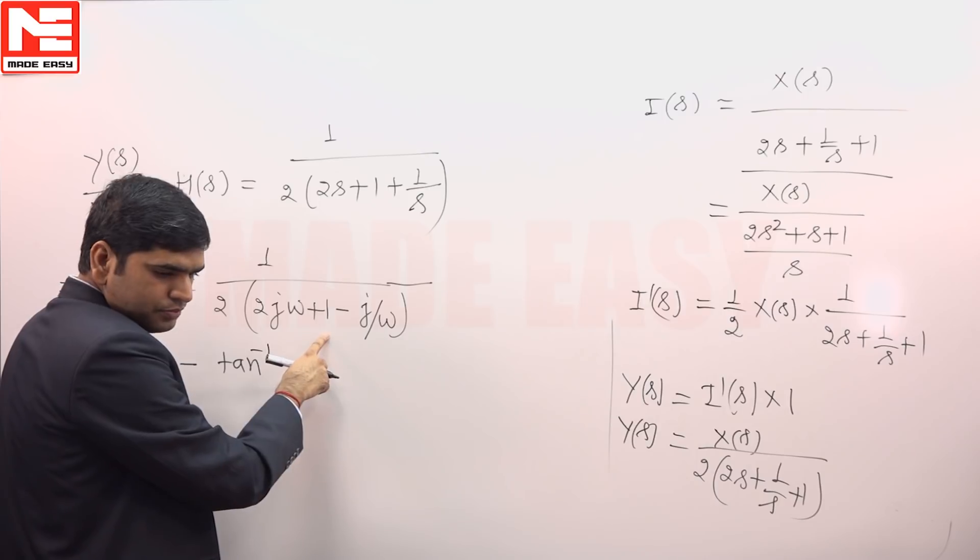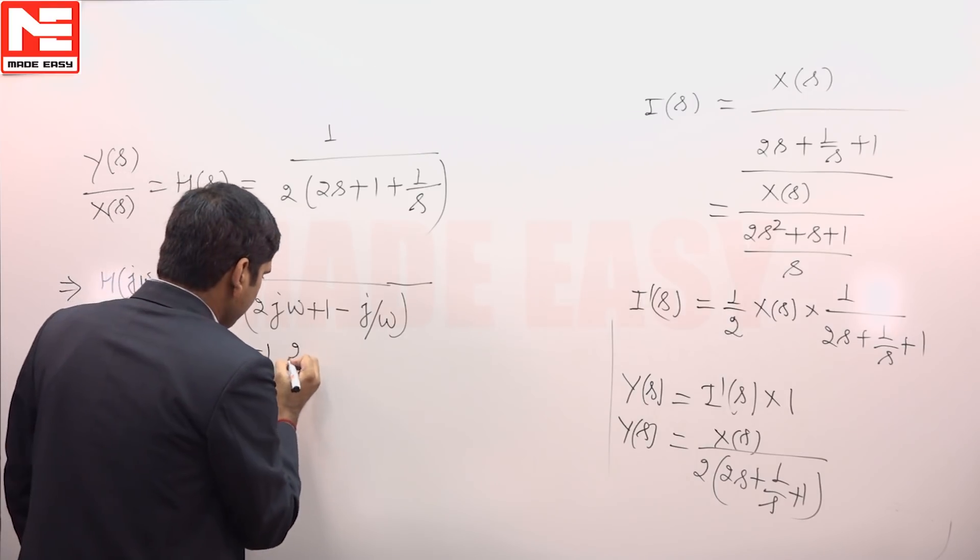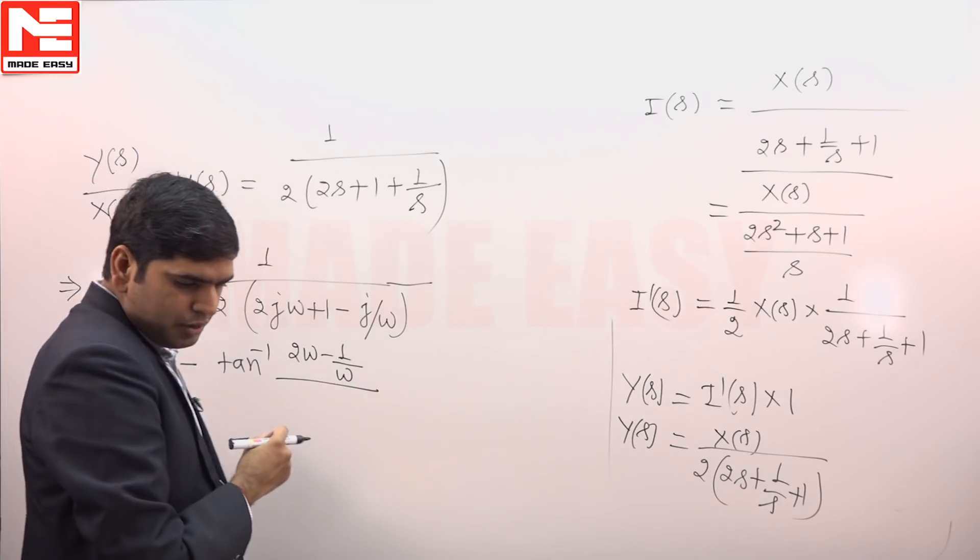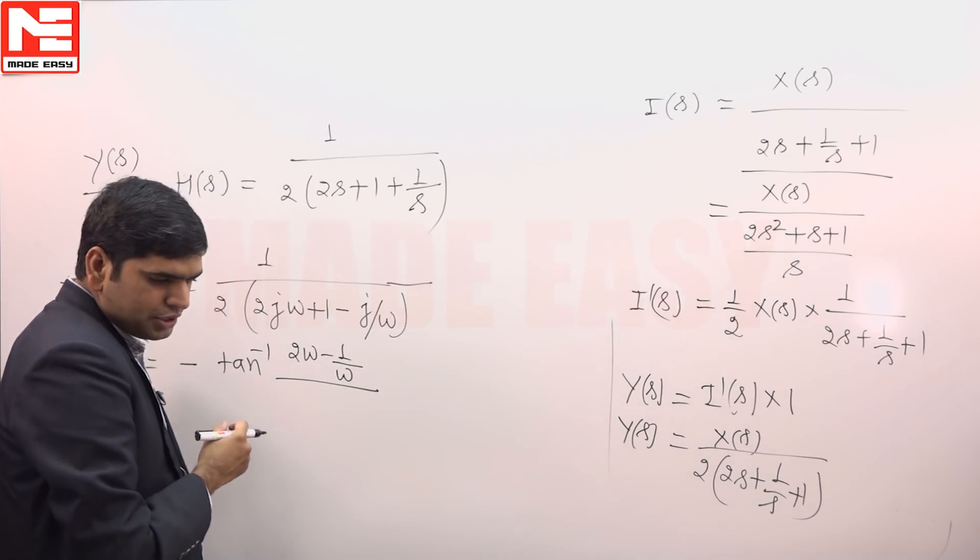Imaginary part is 2ω - 1/ω divided by real part and real part is 1.